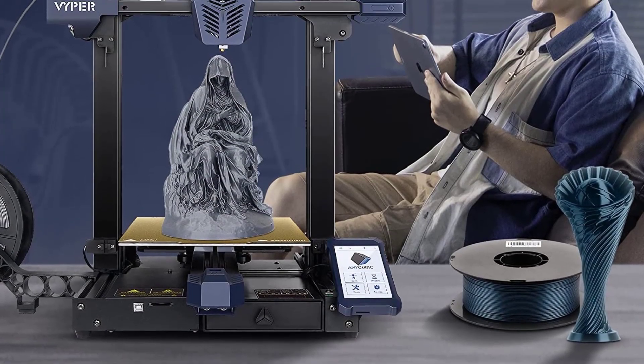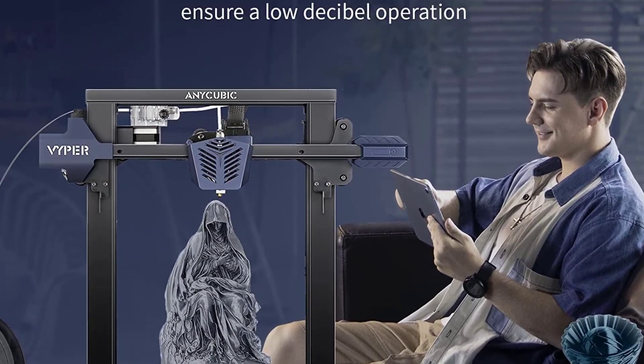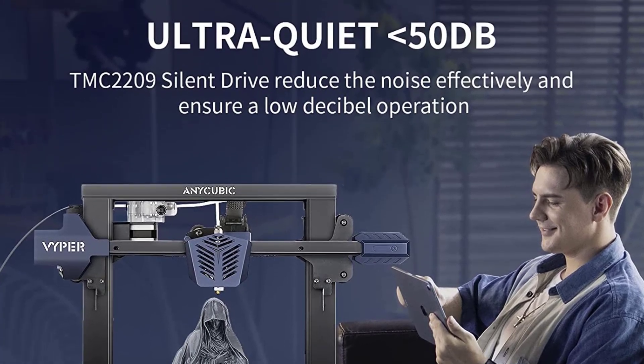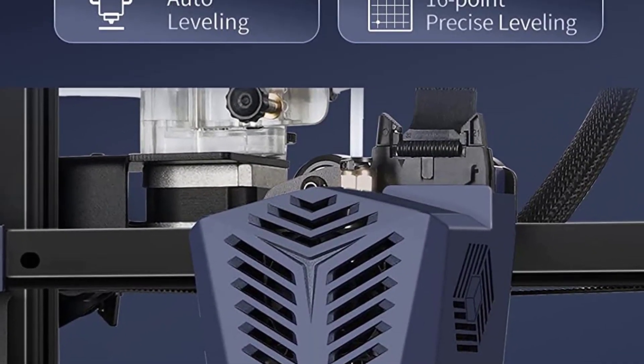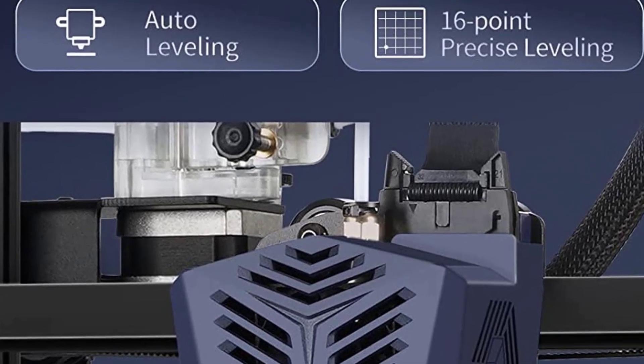The Viper also features an innovative new two-fan dual cooling system, cooling down parts quicker and enabling faster printing without causing errors; the Viper can comfortably print at 100mm per second.